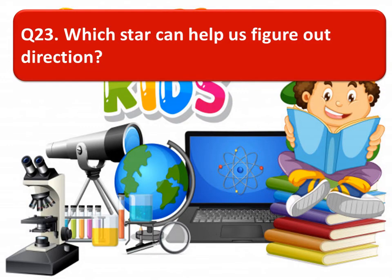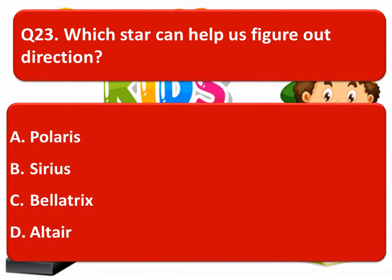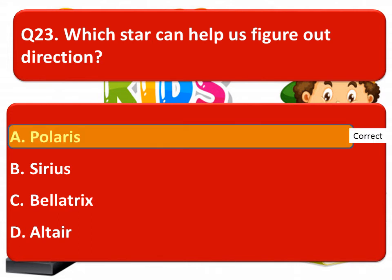Question 23: which star can help us figure out direction? Option A: Polaris, Option B: Sirius, Option C: Bellatrix, Option D: Electra. The correct answer is Option A — Polaris.